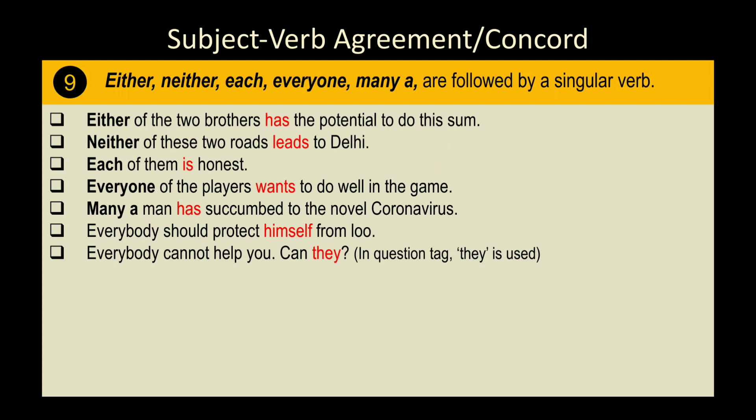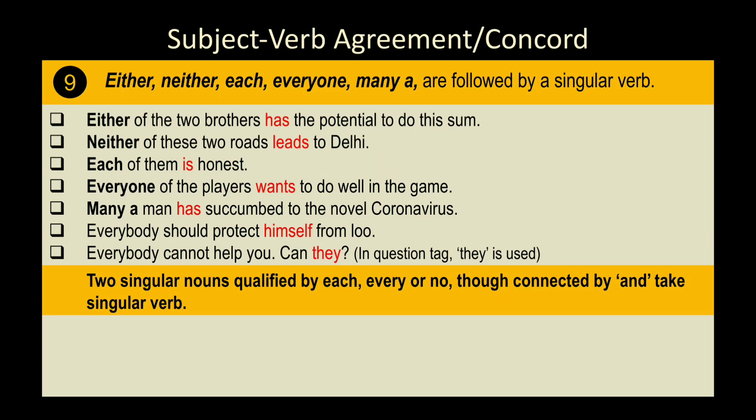Rule 10: Two singular nouns qualified by 'each,' 'every,' or 'no,' though connected by 'and,' take a singular verb. Normally two singular subjects joined by 'and' become plural, but if preceded by 'each,' 'every,' or 'no,' they remain singular. Example: 'Each boy and each girl was honoured.' 'No boy and no girl was honoured.' Without these qualifiers, we would use a plural verb.